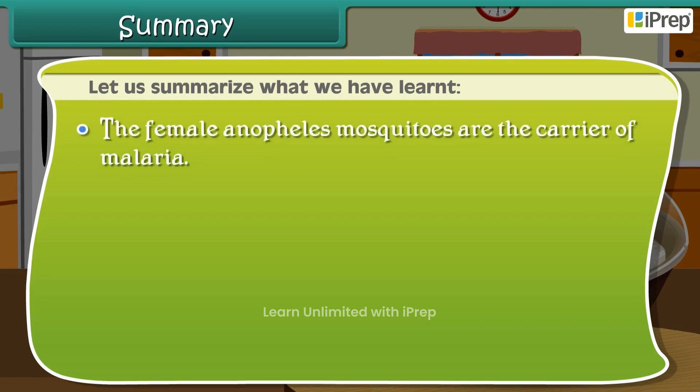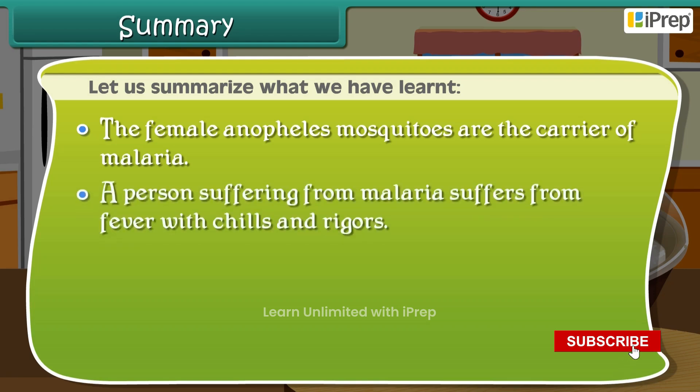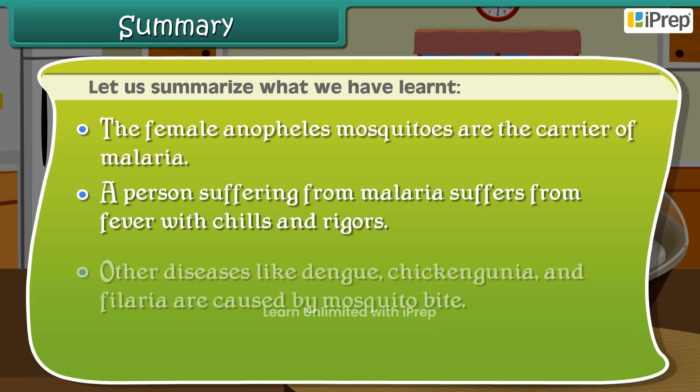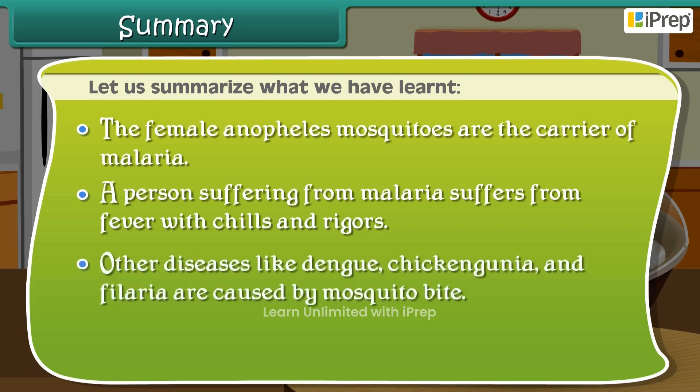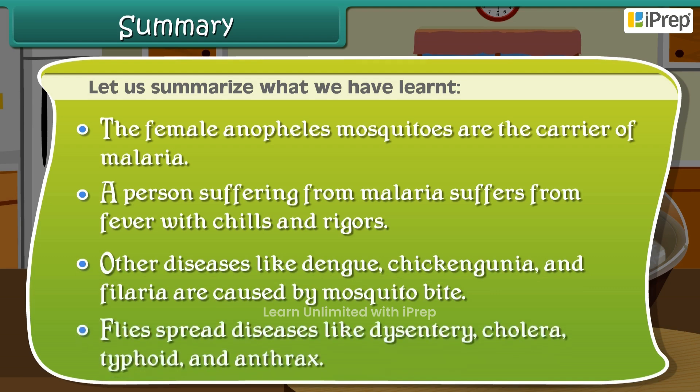The female Anopheles mosquitoes are the carriers of malaria. A person suffering from malaria suffers from fever with chills and rigors. Other diseases like dengue, chikungunya, and filaria are caused by mosquito bites. Flies spread diseases like dysentery, cholera, typhoid, and anthrax.